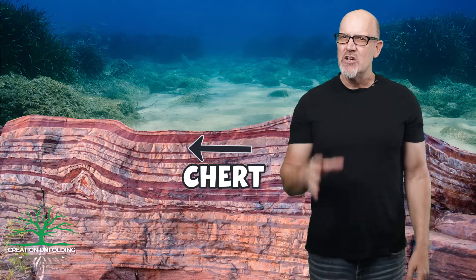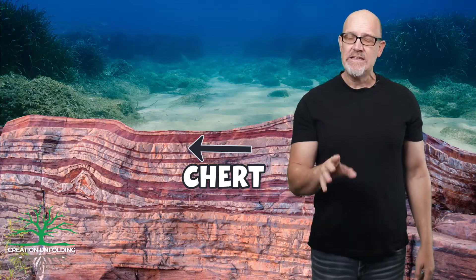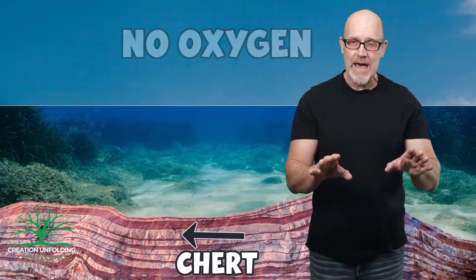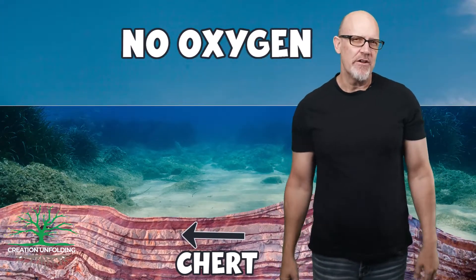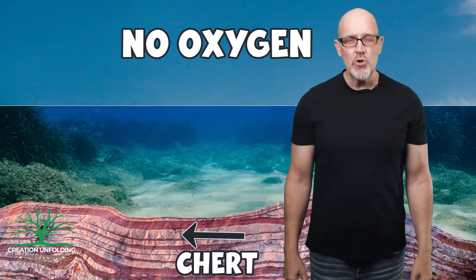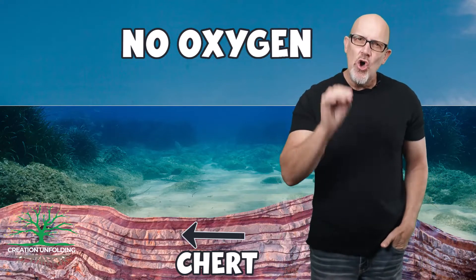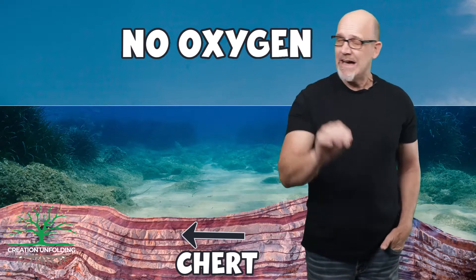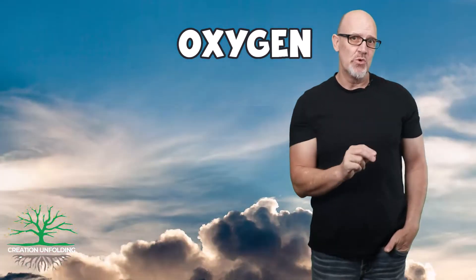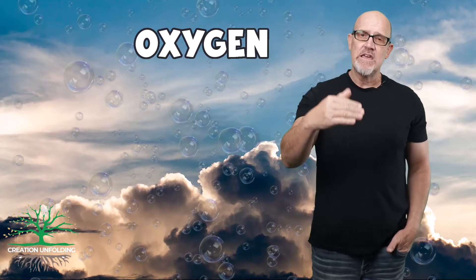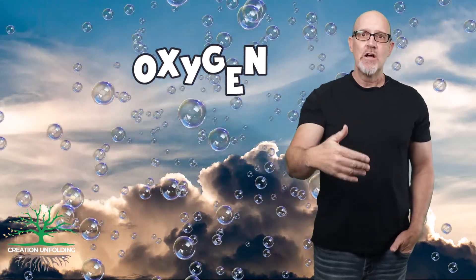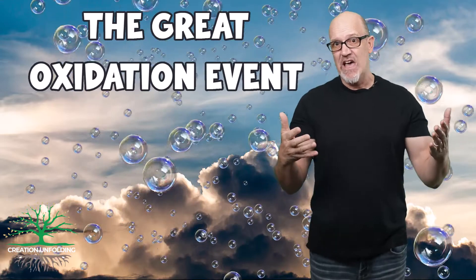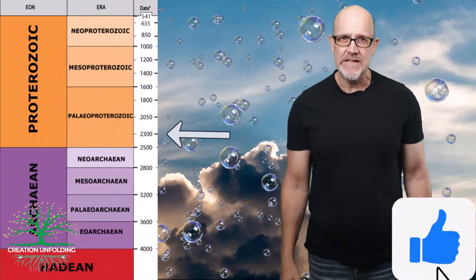During the Archean, no oxygen had yet made its way into the atmosphere and could only be found in the oceans. According to most scientists, Earth's global distribution of stromatolites and their photosynthetic metabolic pathways eventually caused oxygen to make its way into the atmosphere, colonizing in what has been called the Great Oxidation Event, conventionally dated to 2.3 billion years ago.